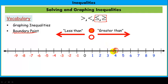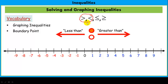So if I put a filled point here, that means I'm including 4. If I have it open, it refers to strict inequalities — meaning 4 is not equal to 4, so I wouldn't include it. We call the filled-in one inclusive because we include it, and the open one is exclusive because we exclude the actual boundary point.